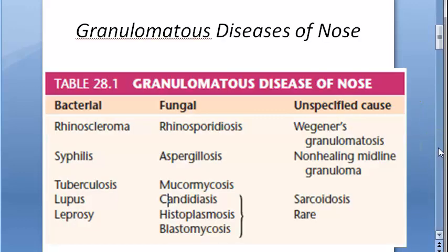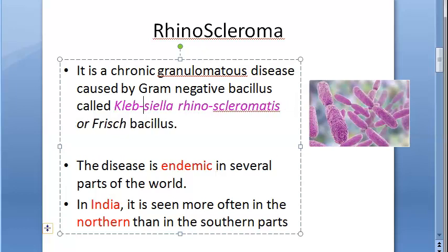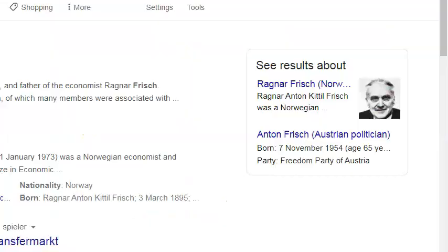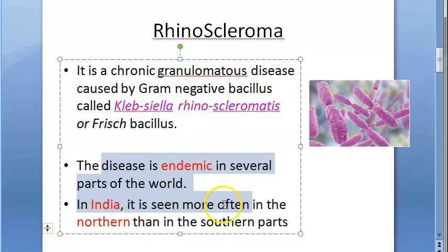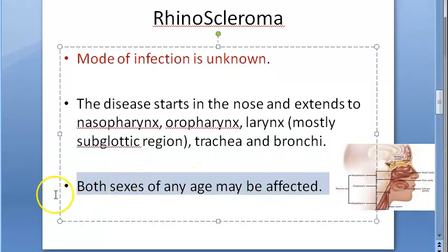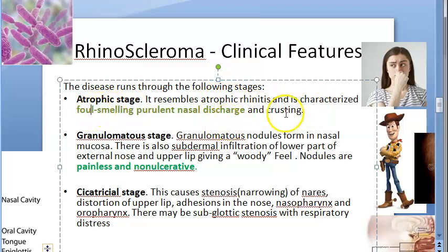To summarize: rhinoscleroma is an ENT topic involving granulomatous disease of the nose, caused by Klebsiella rhinoscleromatis — a gram-negative bacillus also called Frisch bacillus. The mode of infection is unknown. The disease starts at the nose and can affect the upper lip, nasopharynx, oropharynx, subglottis, trachea, and bronchi. There are three clinical stages: atrophic, granulomatous, and cicatricial.